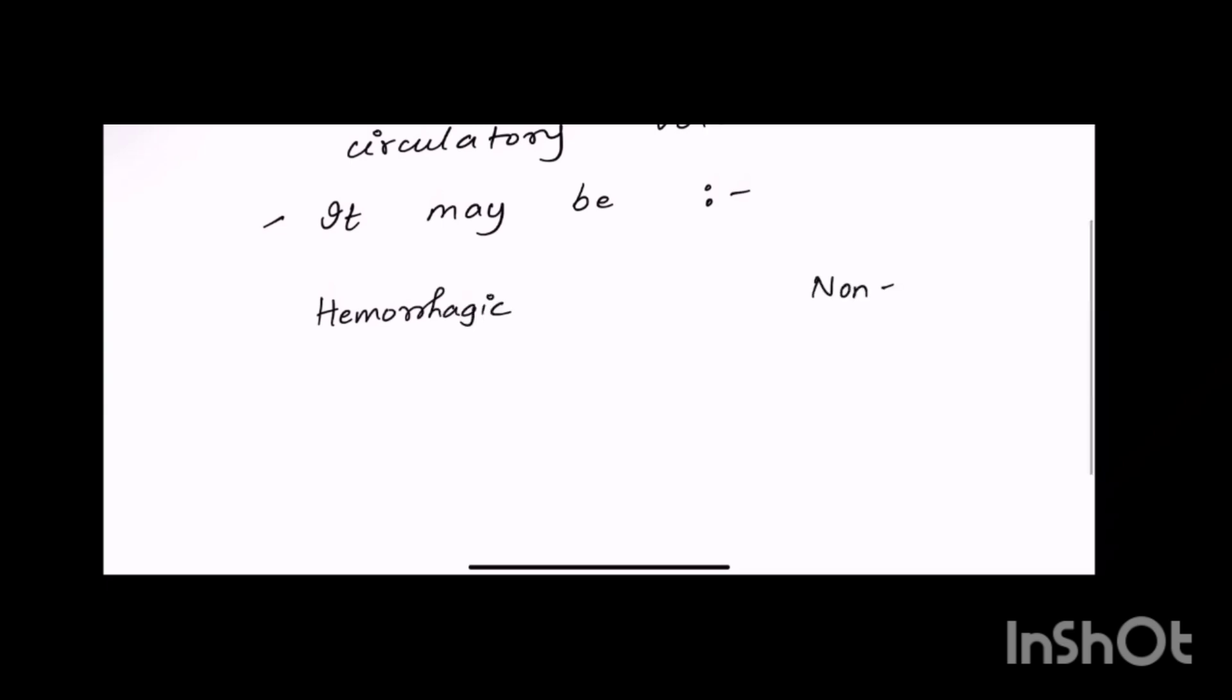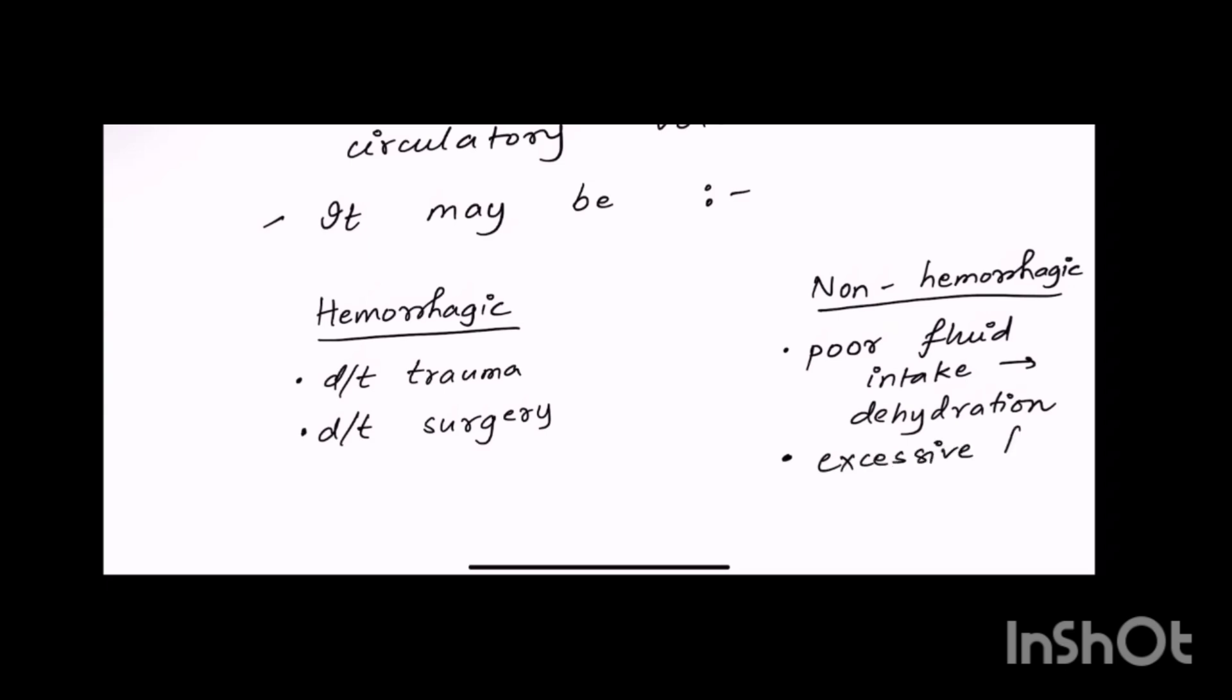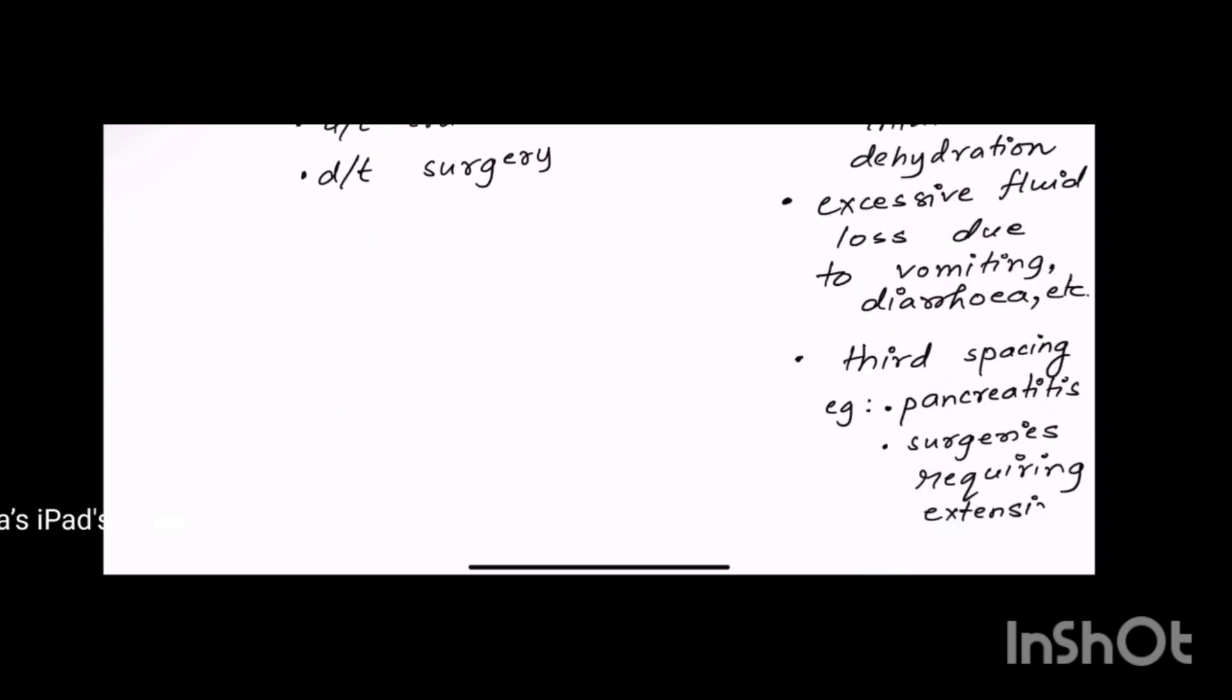Now hypovolemic shock can be hemorrhagic or non-hemorrhagic. Hemorrhagic is related with blood, caused due to trauma or injury. Bahut blood flow ho gaya hai, blood nikal raha hai, toh volume bhi kam ho gaya hai. And non-hemorrhagic is due to poor fluid intake, like when there is dehydration in the body or excess fluid loss due to vomiting or diarrhea.